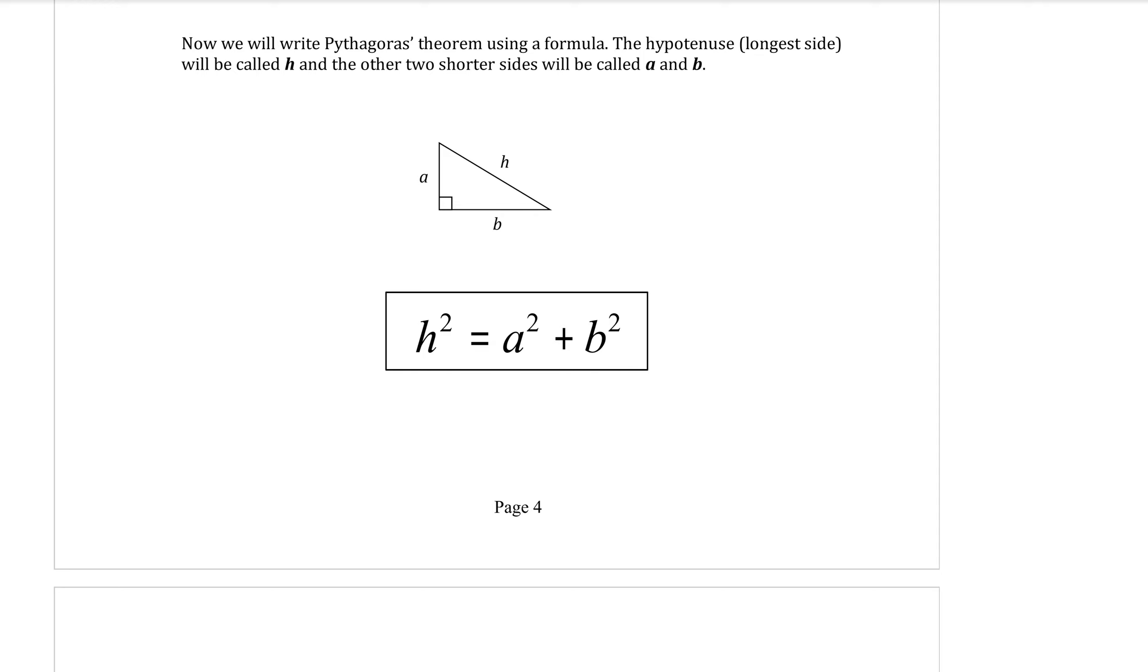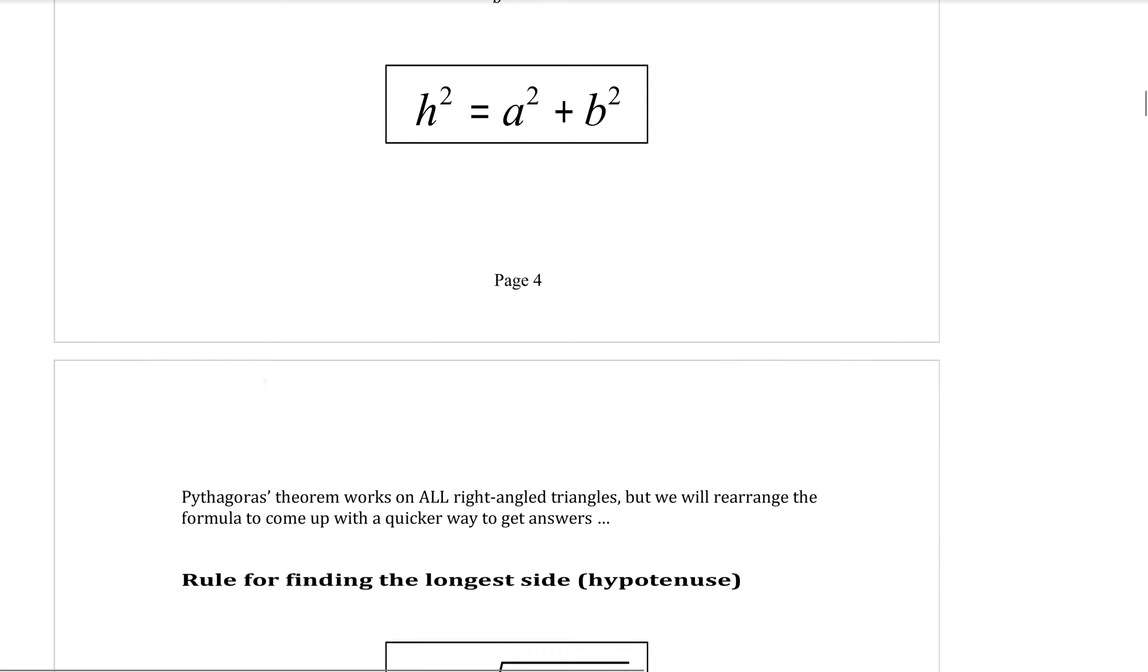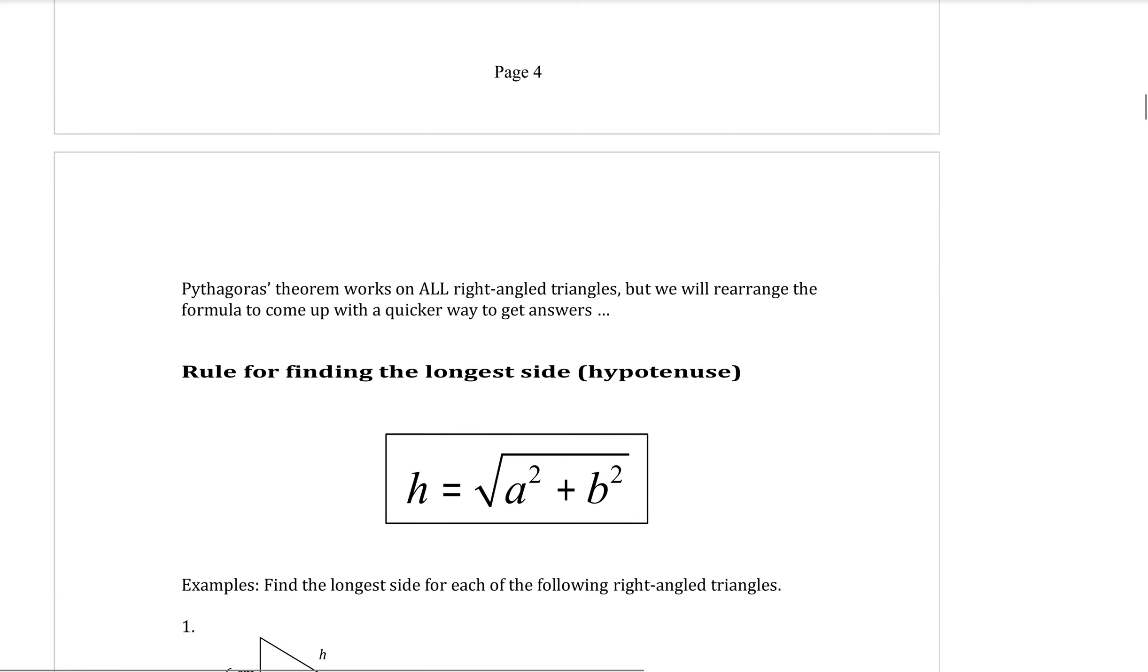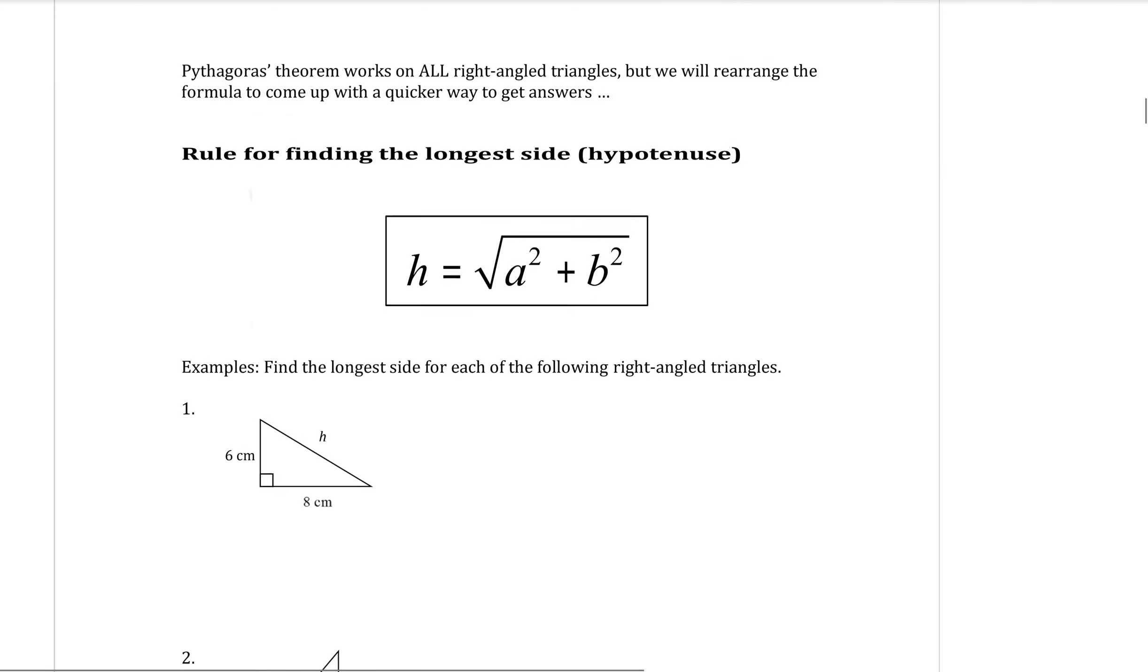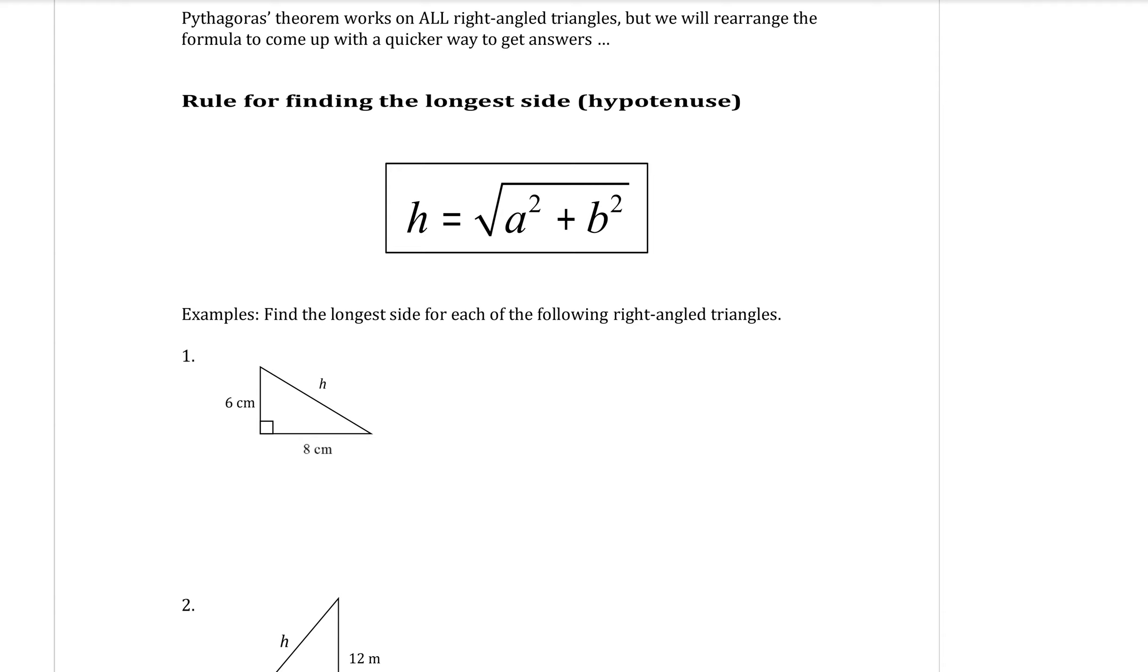Now, because rearranging formulas isn't the easiest thing for everybody to do, I'm actually going to rearrange the formula for you to get the h by itself. So there's going to be two formulas that we're going to learn for this topic. So this is the first one. If you want to find the length of the hypotenuse, this is the formula here that we're going to use.